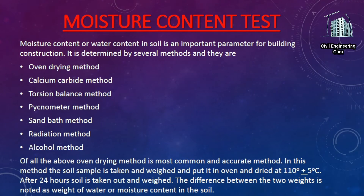The first type is the moisture content test. Moisture content, or water content in soil, is an important parameter for building construction. It is determined by several methods: oven drying method, calcium carbide method, torsion balance method, pycnometer method, sand bath method, radiation method, and alcohol method. Of all these, the oven drying method is the most common and accurate.